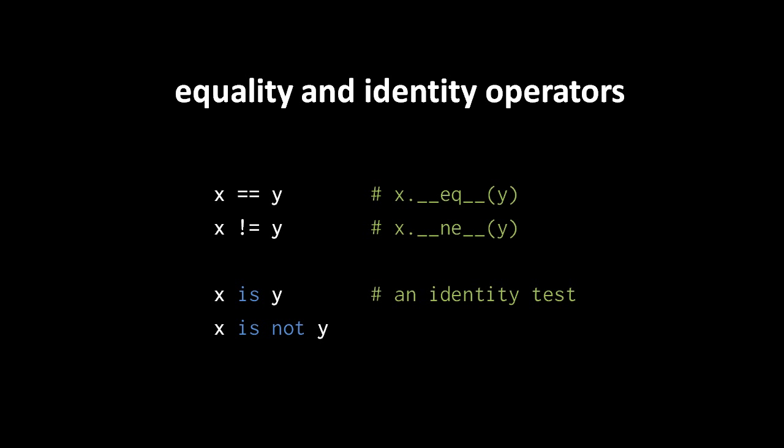Like most operators in Python, these two operators are really method calls in disguise. The equality operator invokes the __eq__ method, whereas the not-equals operator invokes a method called __ne__, as in 'not equals'. As for identity tests, the operator is written as the reserved word 'is', and the logical inverse is written as 'is not'. Though 'is not' is written as two separate reserved words, it's really one single operator — you shouldn't think of it as the 'is' operator followed by a 'not' operator. It's one operator that happens to have a space in the middle.